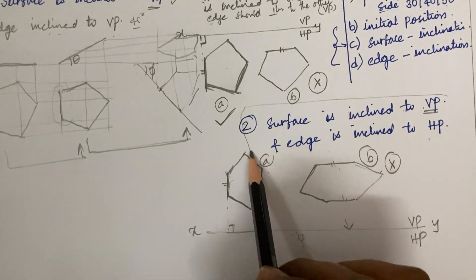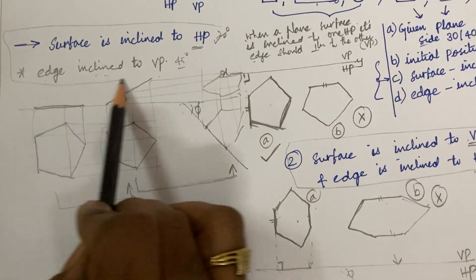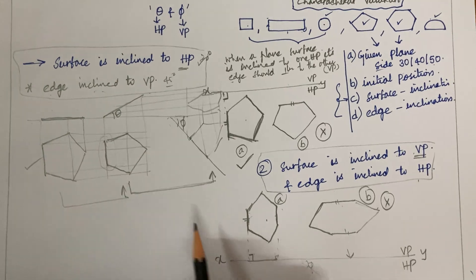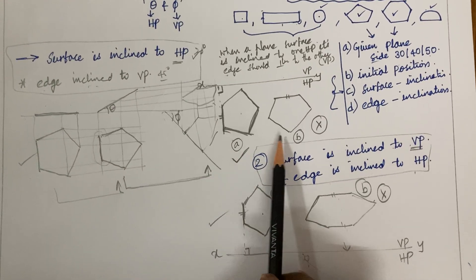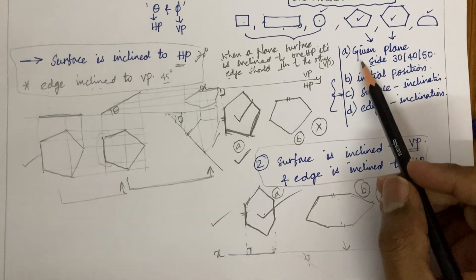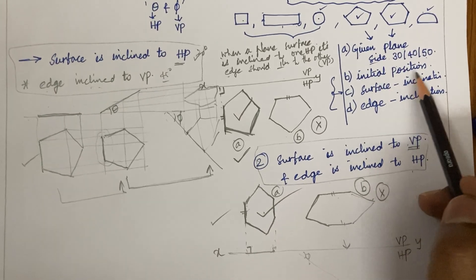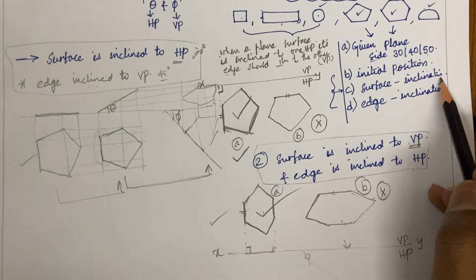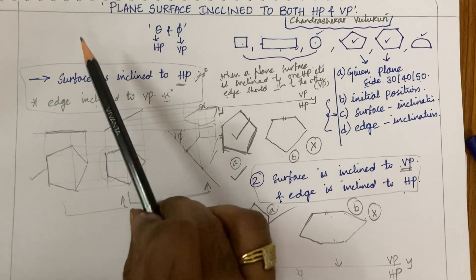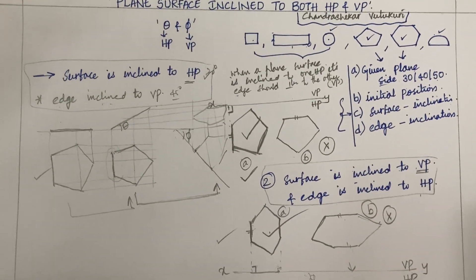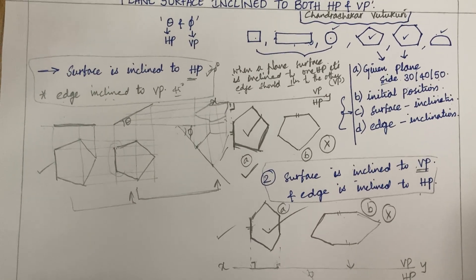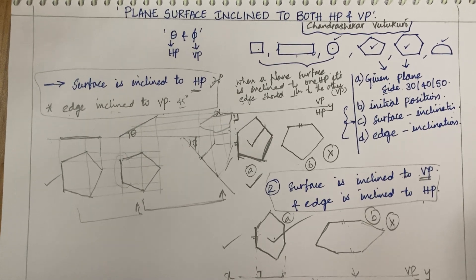Please keep in mind these things so that it will be very easy for you to understand whichever plane is given. Most students get confused when a pentagonal or hexagonal plane is given about which is the correct position to work out. Remember: identify what is the given plane, what are its sides, what is its initial position, whether the surface is inclined to HP or VP, and which plane the edge is inclined to. This is how you work out when a plane surface is inclined to both HP and VP. Please subscribe to my channel and comment for more videos. Good luck and God bless you all.